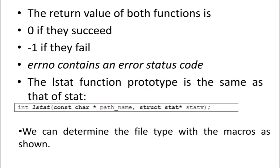If you have any doubts, please post them in the comment section. If this prototype executes successfully, the return value will be zero. If the function fails, the return value is minus one. When it returns minus one, error details are displayed to the user using the errno variable, which contains the error status code.